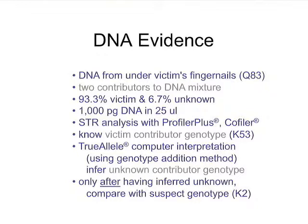There are two contributors to this DNA mixture. The computer tells us it's 93% victim and 6.7% unknown. A lot of DNA — one nanogram. STR analysis was done by the Quantico lab with Profiler Plus and Co-Filer. We know the victim's contributor genotype because we have the victim. Computer interpretation was done by TrueAllele and by other methods, using quantitative addition to infer the unknown contributor genotype. Afterwards, like with all other methods, objectively it was compared with a suspect genotype.